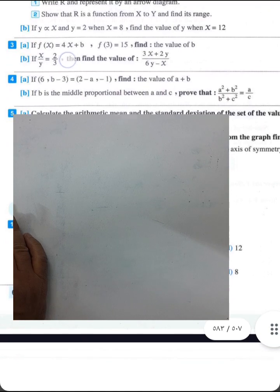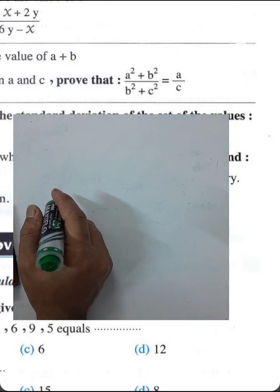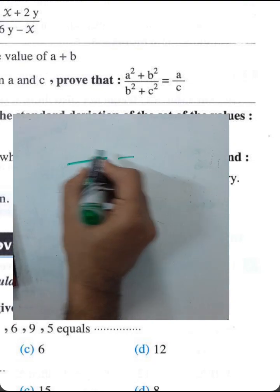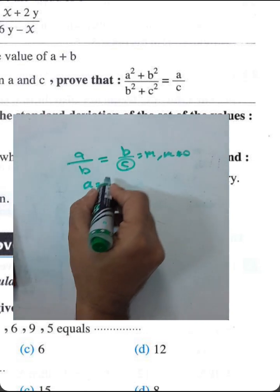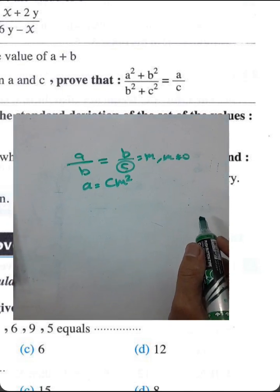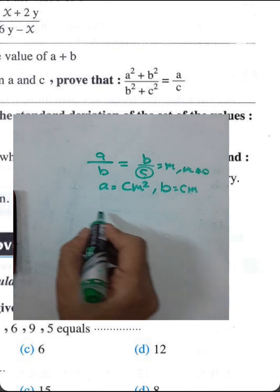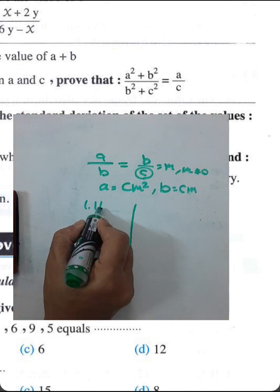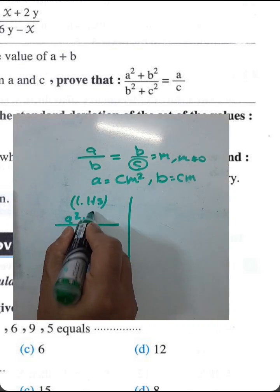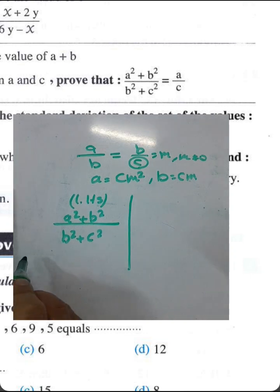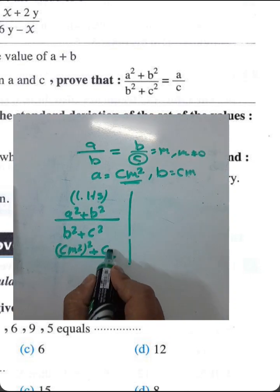Next question: if b is the middle proportional between a and c, prove the given expression. Since b is the middle proportional, we write a equals c·m², b equals c·m. Starting with the left-hand side: (a² plus b²) over (b² plus c²) equals (c·m² squared plus (c·m)²) over ((c·m)² plus c²).